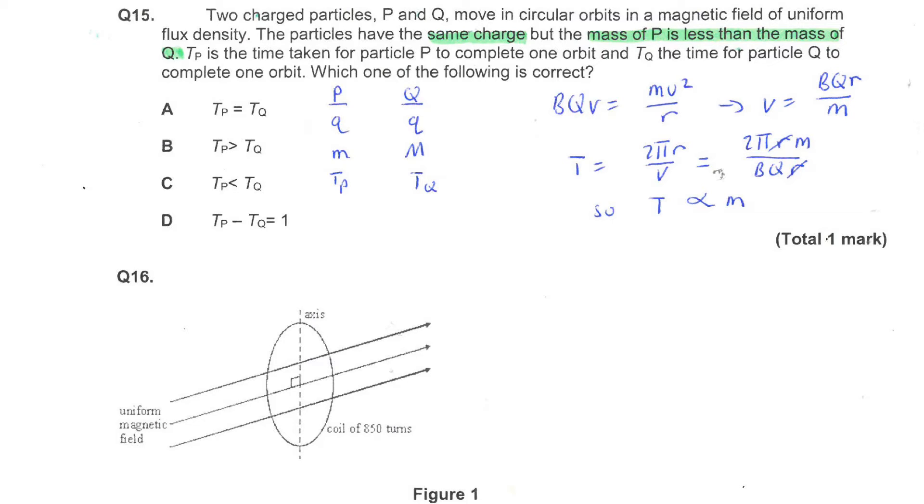From this, it follows that since the mass of P is less than the mass of Q, so the time period of P will be less than the time period of Q, leading to the answer C.